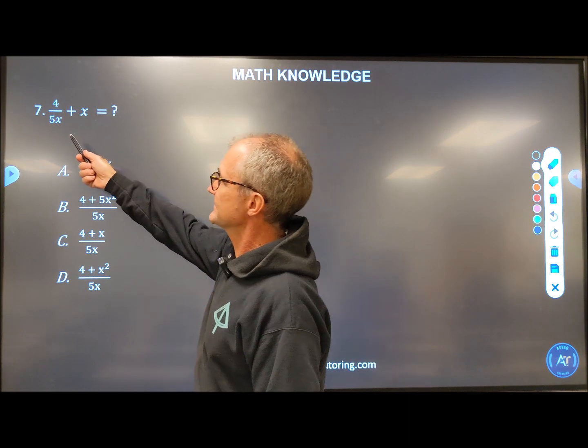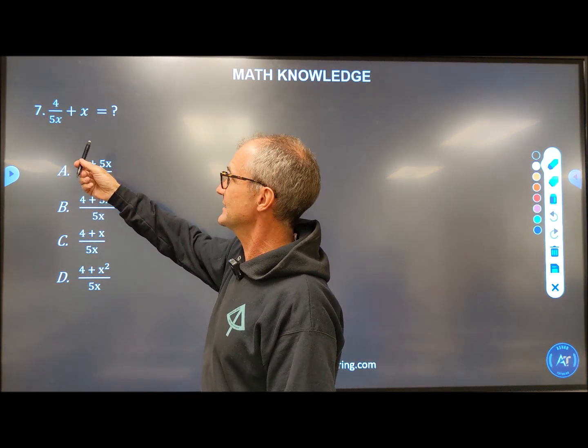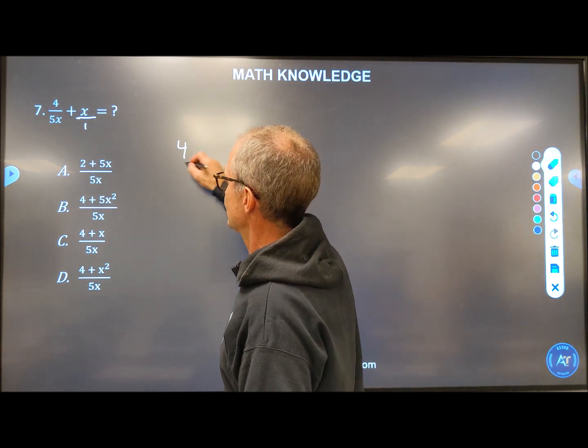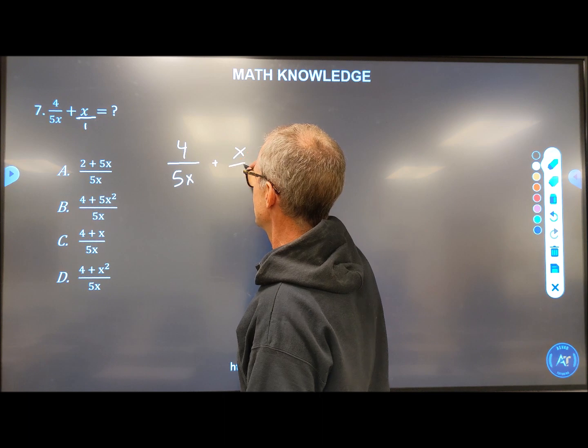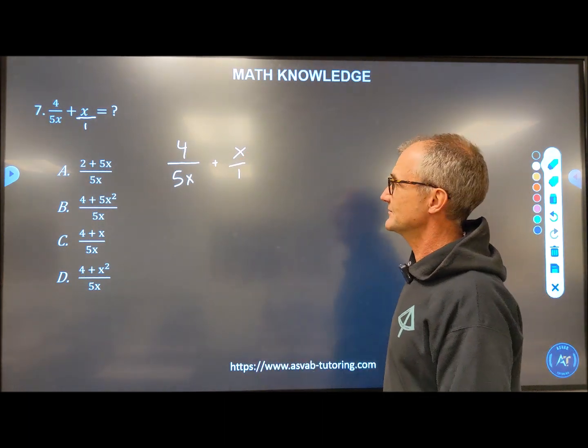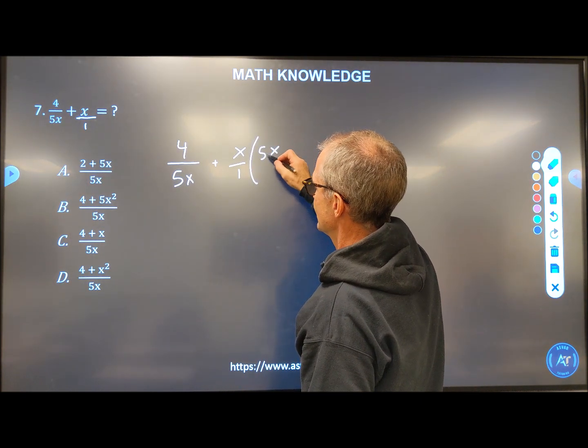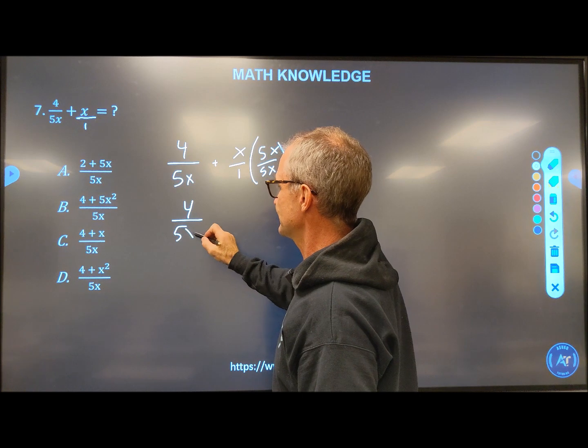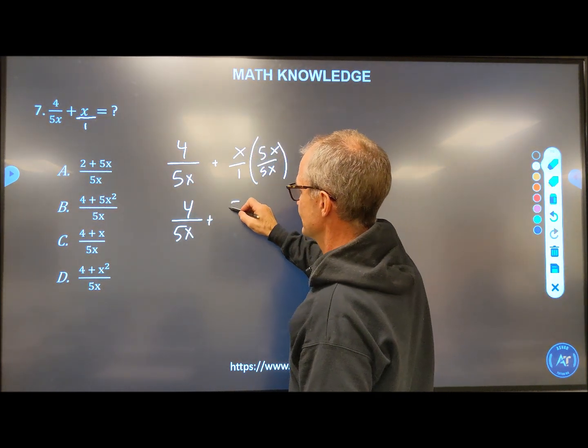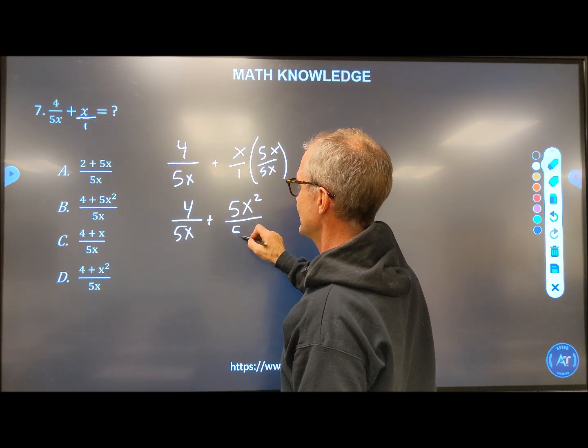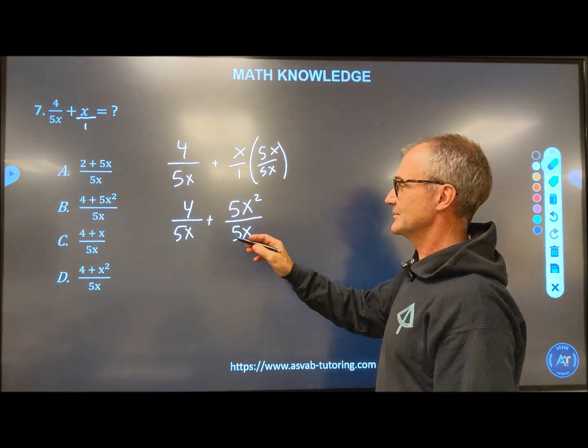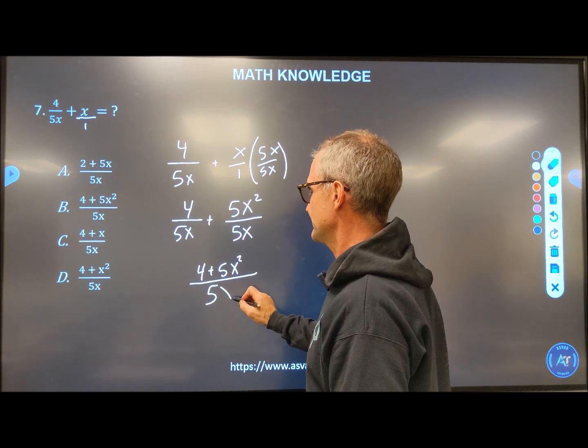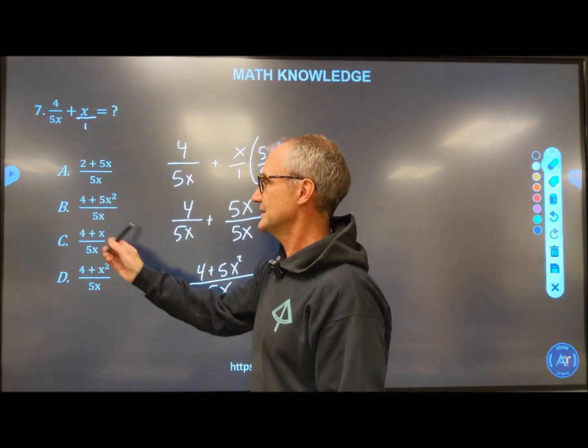Number seven, adding these two things together. Well, when I'm adding fractions, I have to have a common denominator. That's the number on the bottom. There's no denominator here, so it has to be a one. So I have 4 over 5X plus X over 1. To get that bottom number, I could only multiply by one so it's not to affect the value. So I'm going to multiply this by 5X over 5X. I'm multiplying by one, doesn't change the value, but that gives me that common denominator. So now I have 4 over 5X plus X times 5X, which will be 5X times X is X squared over that common denominator of 5X. Now that I have a common denominator, I add across the top. So I have 4 plus 5X squared over the common denominator of 5X. I look up here and there it is, right there, answer B.